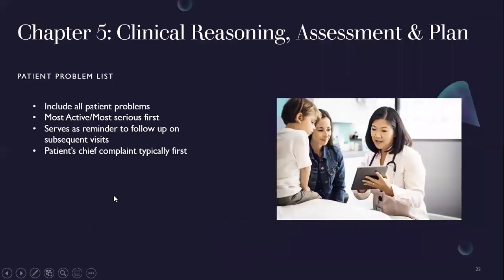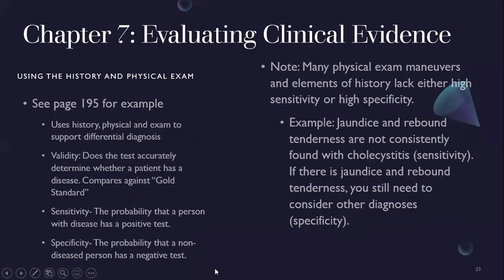The patient problem list includes all patient problems, most active and most serious first. It serves as a reminder to follow up on subsequent visits. For example, if someone comes in with a sore throat but has a high BMI, include the high BMI in the problem list even if it's not pertinent at this visit — so you can address it at a future visit. Evaluating clinical evidence: validity asks whether the test accurately determines if a patient has a disease, compared against the gold standard.